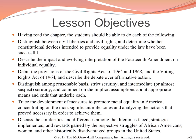Fourth, distinguish among reasonable basis, strict scrutiny, and intermediate or almost suspect scrutiny tests, and comment on the implicit assumptions about the appropriate means and ends that underline each of these. Next, we're going to trace the development of measures to promote racial equality in America, and concentrate on the most significant milestones and analyze the actions that have proven necessary to achieve them. Lastly, we're going to discuss the similarities and differences among the dilemmas faced, the strategies implemented, and the rewards gained by the respective struggles of African Americans, women, and other historically disadvantaged groups in the United States.